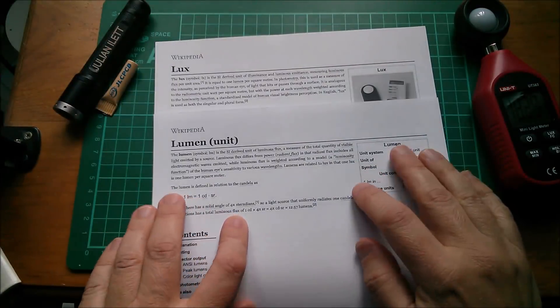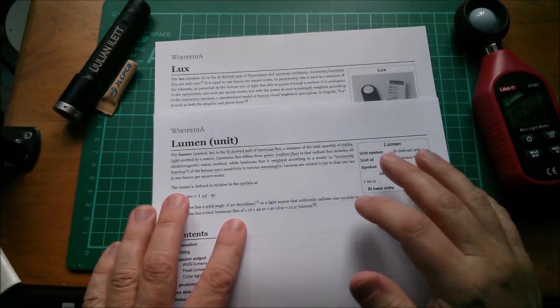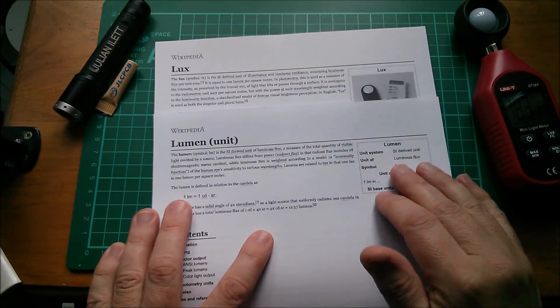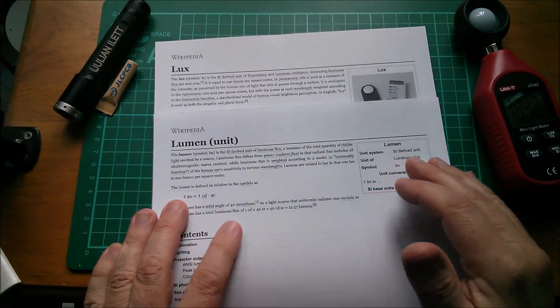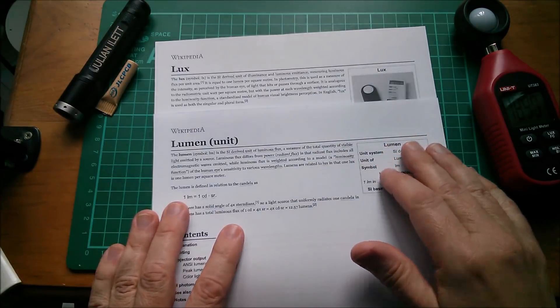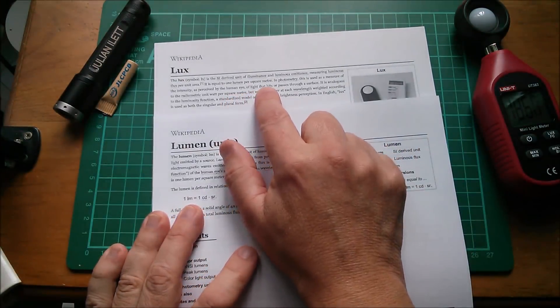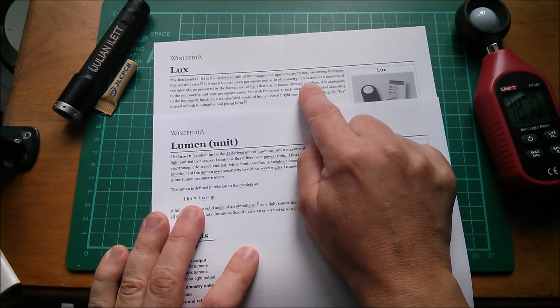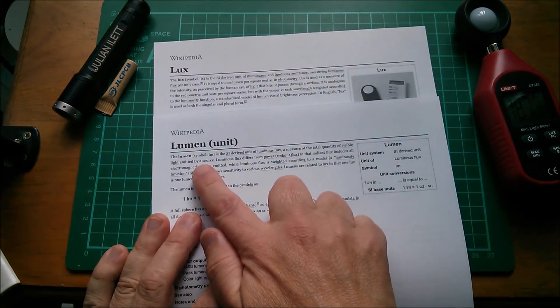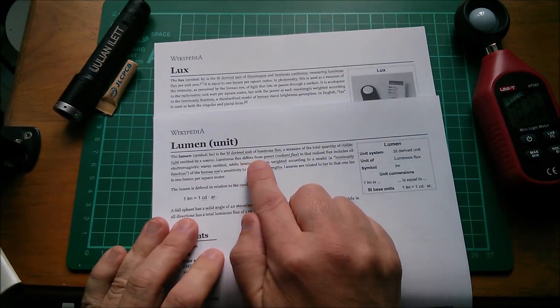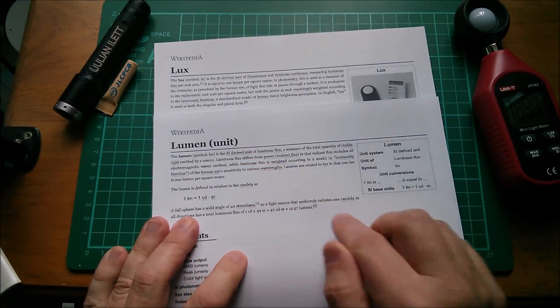Now of course the problem I've got here is that I'm using two entirely different units of measurement to measure two entirely different things. Lux is the SI-derived unit of illuminance and luminous emittance, whereas the lumen is the SI-derived unit of luminous flux.